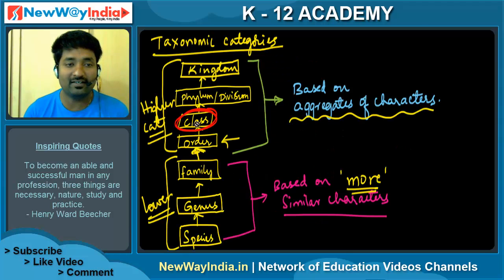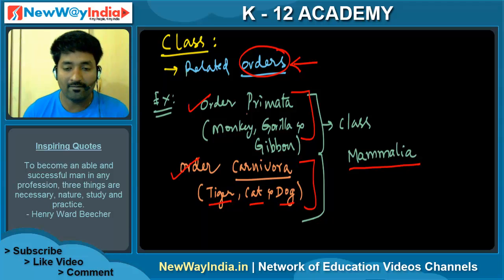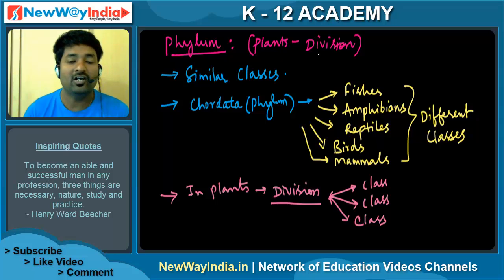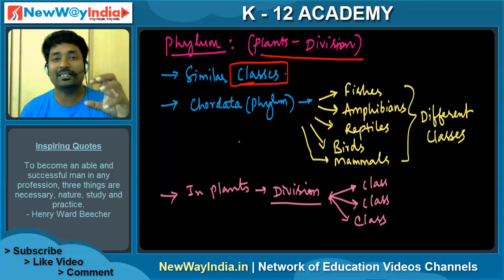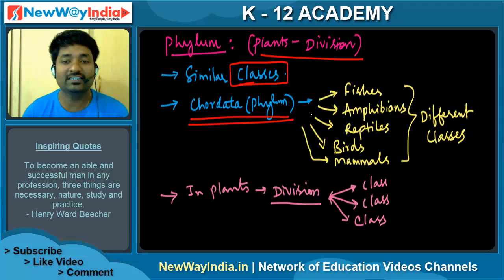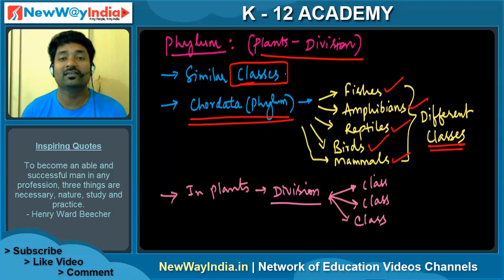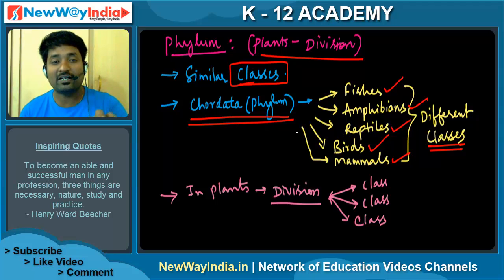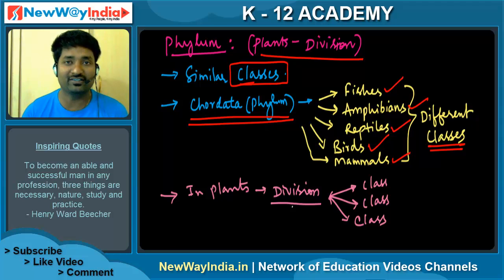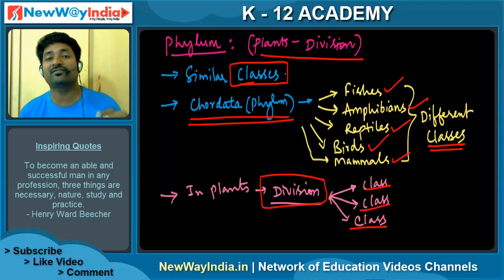After class comes phylum, or in the case of plants, division. Phylum is a combination of similar classes. For example, phylum Chordata includes different classes such as Pisces (fishes), Amphibians, Reptiles, Birds, and Mammals — all different classes placed under one phylum, Chordata. In plants, one division similarly includes different classes.